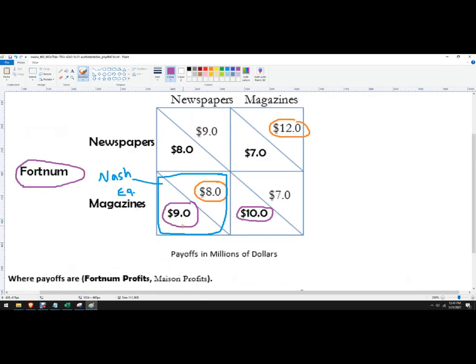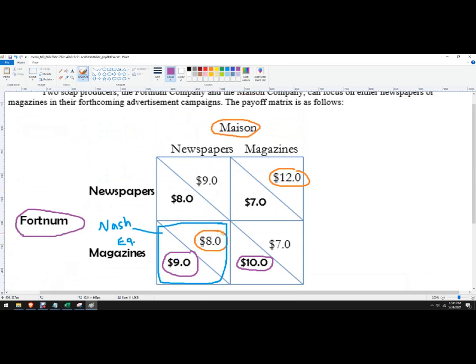What will be the profit of each firm? Fortnum is going to make nine million, Mason is going to make eight million. It's not the best outcome for Mason but it is better than this outcome, and nine is the second best outcome for Fortnum.